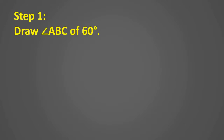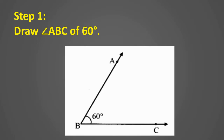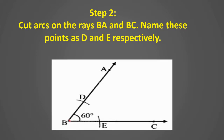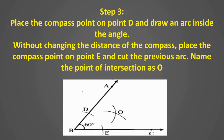First step: draw angle ABC of 60°. Step 2: cut arcs on rays BA and BC; name the points as D and E respectively. Step 3: place the compass on point B and draw an arc inside the angle without changing the compass distance. Then place the compass point on point E and cut the previous arc. Name the point of intersection as O.